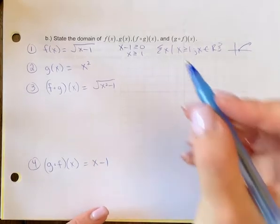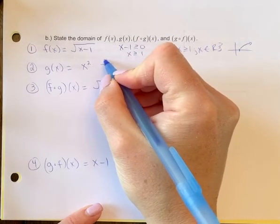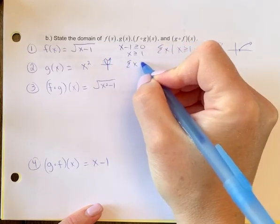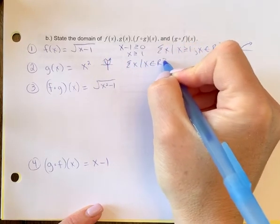Number 2, a parabola. You can picture the shape if you wish, but we know there's no restriction, so the domain of g of x is just x is the element of all real numbers.